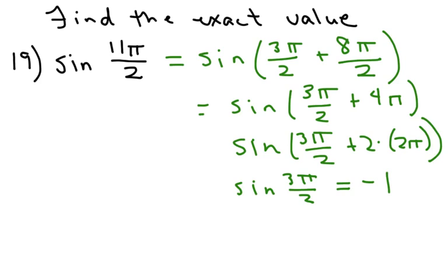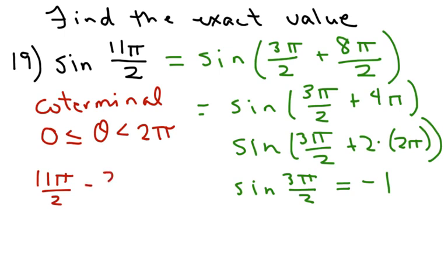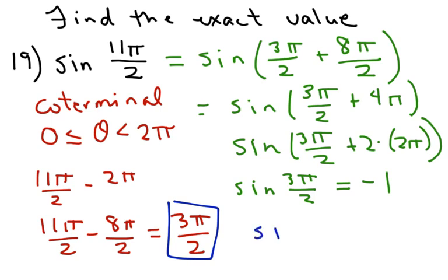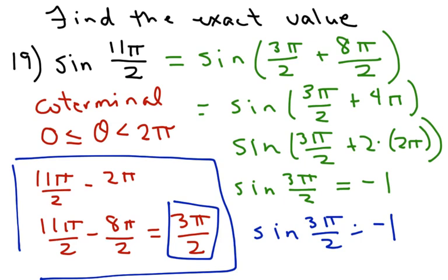Another way to do it is keep subtracting 2 pi. So basically what we're looking for, what they're doing here is finding coterminal angles. And we want our angles to be between 0 and 2 pi. Because we have all the information between 0 and 2 pi. So you can take 11 pi over 2 and subtract 2 pi. Which is the same thing. You have to have the same denominator. So 11 pi over 2 minus 8 pi over 2, which equals 3 pi over 2. So this is our coterminal angle. And then you just go sine of 3 pi over 2 equals negative 1. I prefer this way. But either way, this is the more formal way.